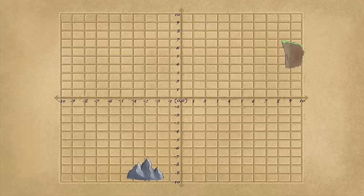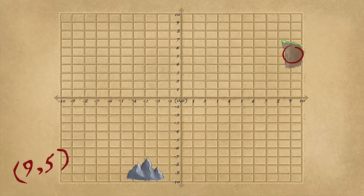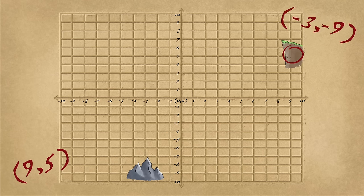To plot the coordinates 9, 5, go right 9, up 5, to where you were round. 4, negative 3, negative 9, go left 3, down 9, where they intertwine.